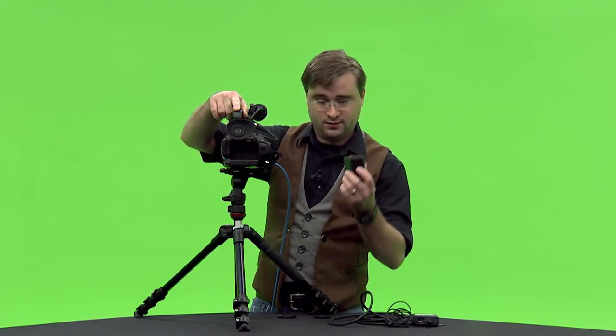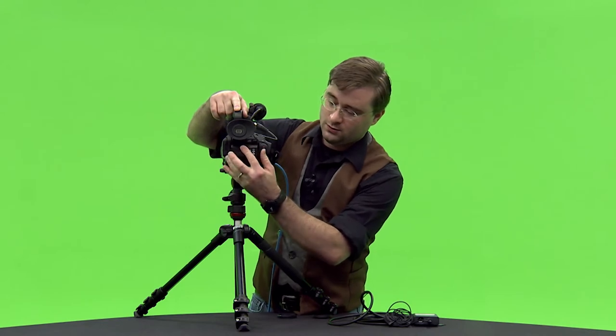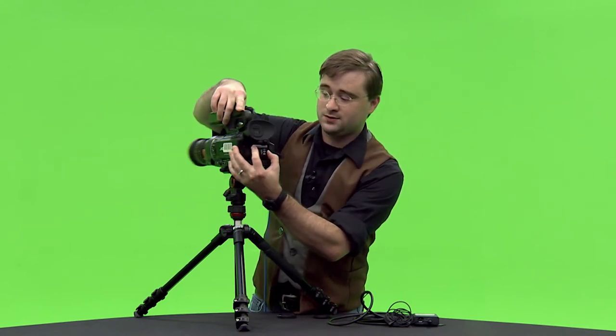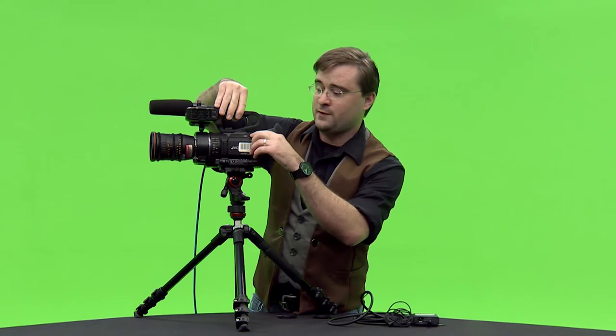Once you've got your lens on the next thing you want to do is turn your camera on. On the back of the camera there's a battery slot. Take your battery, push it in and slide over to lock in place. Power switch is located on the top of the camera. Go ahead and move it to the on position.